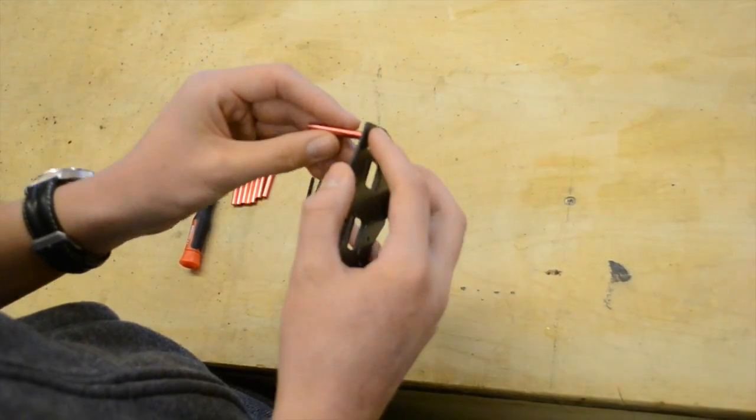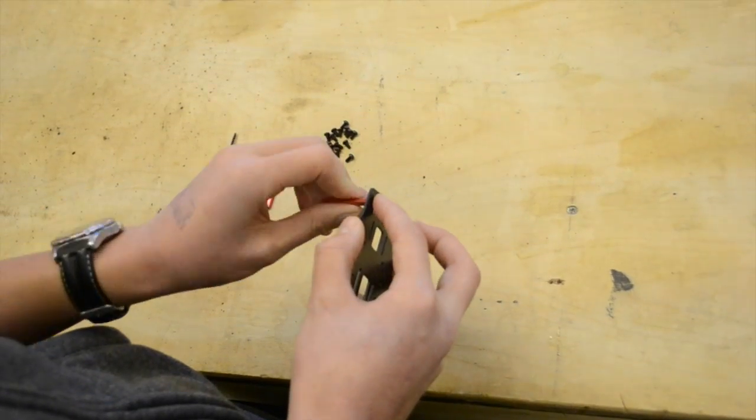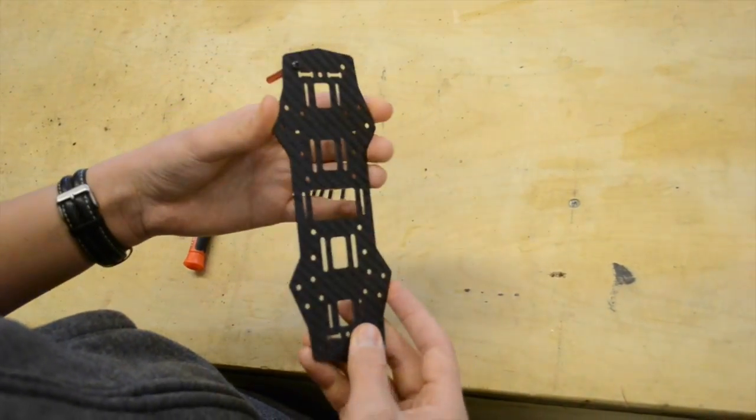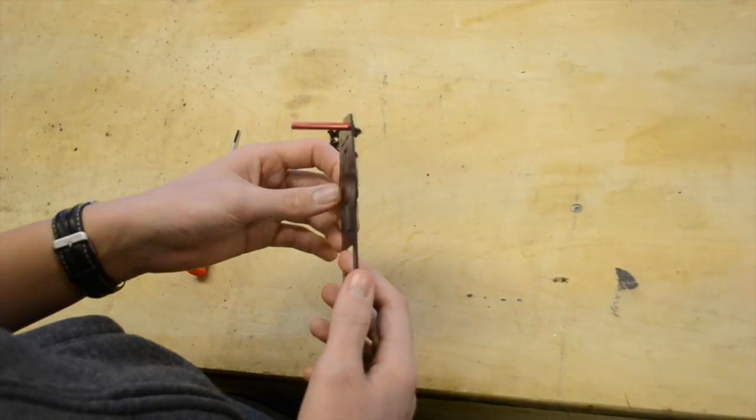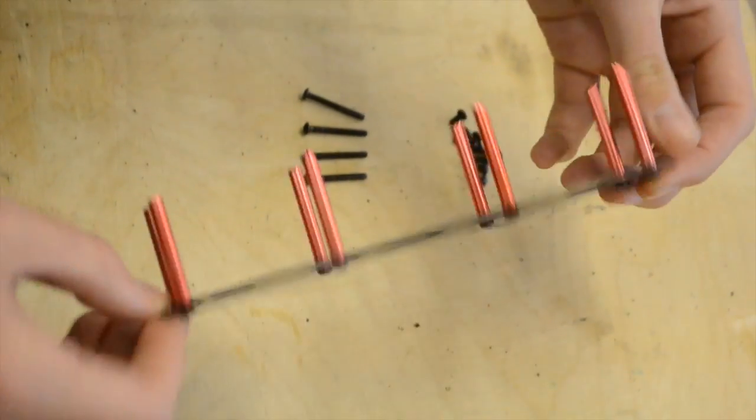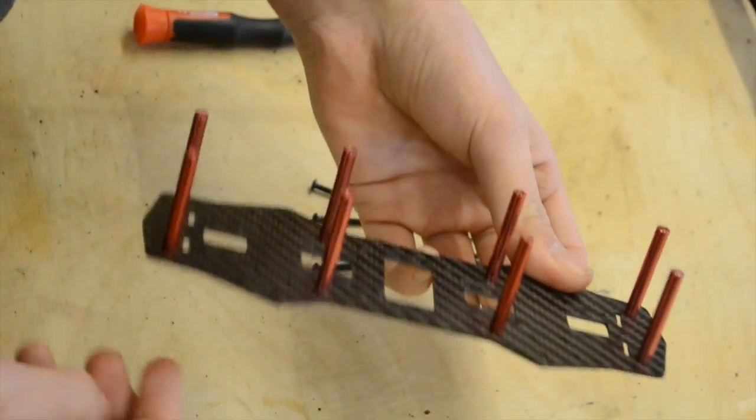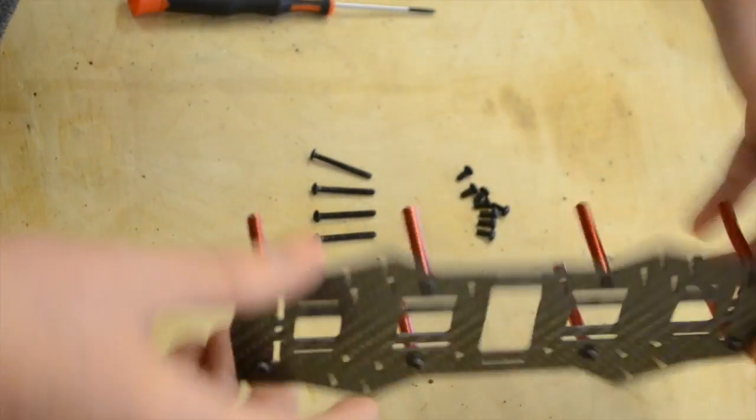And take the 35mm standoffs and just screw them on hand tight, because we can come back with a screwdriver later. And you want to go along all of them. If you've got it right, it will look like this. You've got the standoffs roughly evenly spaced apart. Now, you want to flip that bit over.